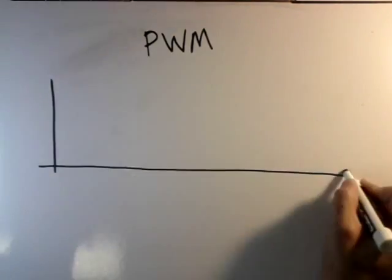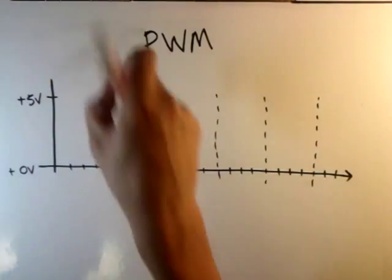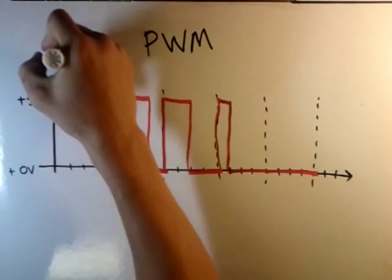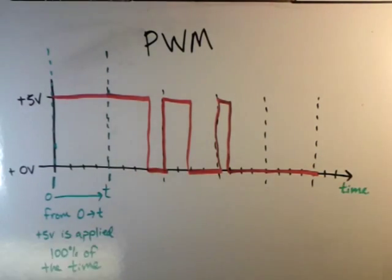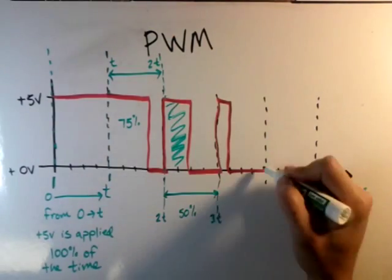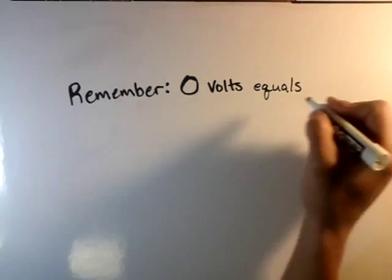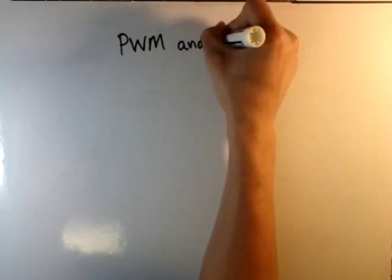Getting into more depth about pulse width modulation, here's an example of a possible PWM output. For example purposes, I'm going to refer to lowercase t as one second. So we see for the first second, PWM equals five volts 100% of the time. For the next second, PWM equals plus five volts 75% of the time. As time goes on, the pulse width of plus five volts is being changed, or modulated. Keep in mind that zero volts in these circuits equals ground.